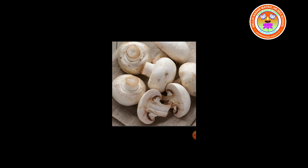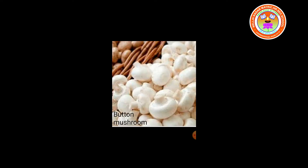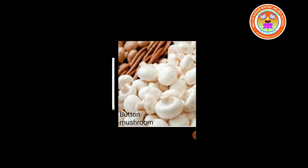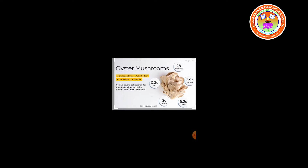There are more than 3000 types of mushrooms. For example, button mushroom, which is called Agaricus bisporus. This is oyster mushroom, known as Pleurotus species.